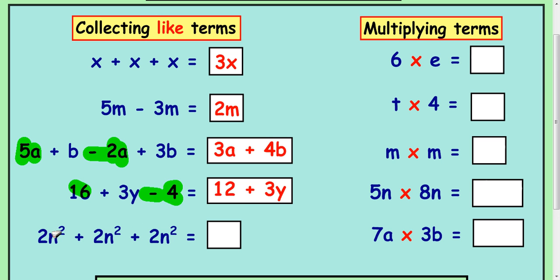Right, this last example here looks much more complicated, but it's the same idea. You've got 2n squared, you've got another 2n squared, and another 2n squared. So all together, we've got 6n squareds.